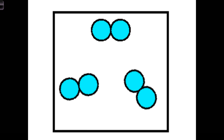Number eleven is an element. There's only one type of atom, so it doesn't matter how they're arranged — it's an element.